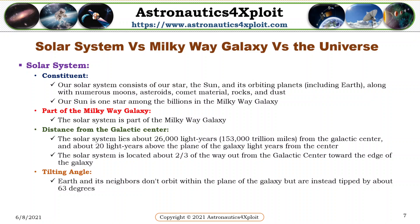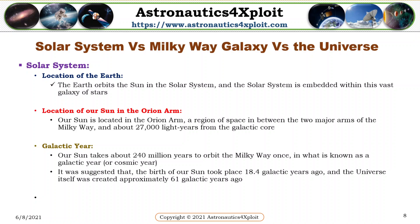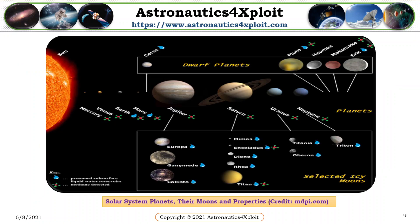It is located about two-thirds of the way from the galactic center towards the edge of the galaxy. Earth and its neighbors don't orbit within the plane of the galaxy, but are instead tipped by about 63 degrees. Earth orbits the sun in the solar system, and the solar system is embedded within this vast galaxy of stars. Our sun is located in the Orion Arm, which is a region of space in between the two major arms of the Milky Way and about 27,000 light years from the galactic core. Our sun takes about 240 million years to orbit the Milky Way once, in what is known as a galactic year or cosmic year. It was suggested that the birth of our sun took place 18.4 galactic years ago and the universe itself was created approximately 61 galactic years ago. This picture shows solar system planets, their moons, and properties.